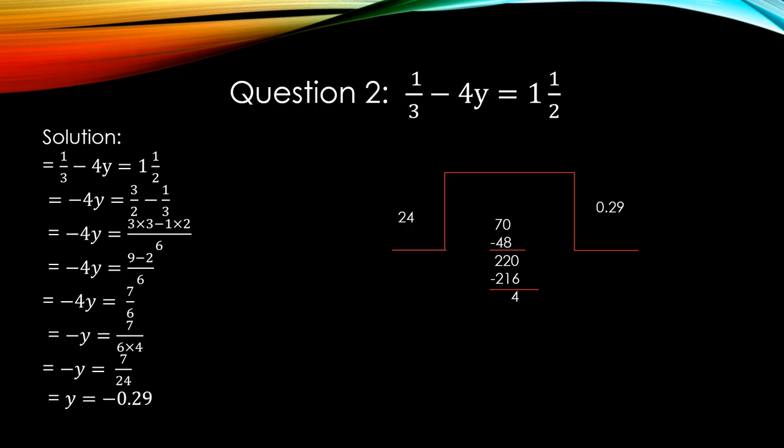Now consider question number 2. It is a linear equation in one variable with fractions: 1 upon 3 minus 4y is equal to 1 whole number 1 upon 2. We have to find out the value of y. Let's start the solution. In the solution, you first write the question again. On the left hand side, you can see 1 upon 3 is the fraction. On the right hand side, there is a whole number fraction. First, you change the whole number fraction into improper fraction. How can you do? 2, 1 is 2. 2 plus 1 is 3. 3 upon 2.